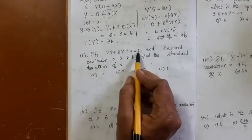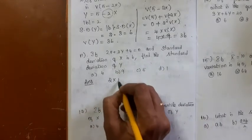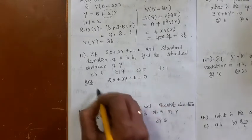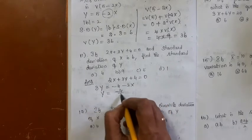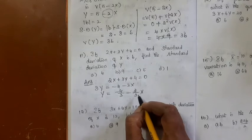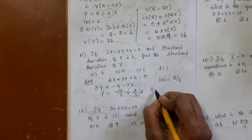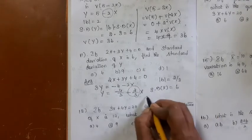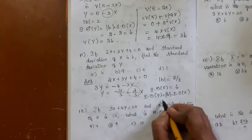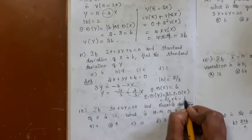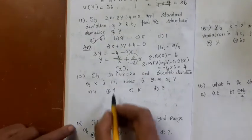If 2x + 3y + 4 = 0 is the relationship between two variables and SD(x) = 6, find SD(y). Rearranging for y: y = -4/3 - (2/3)x, so b = -2/3 and |b| = 2/3. SD(y) = |b| × SD(x) = (2/3) × 6 = 4. The answer is option A.